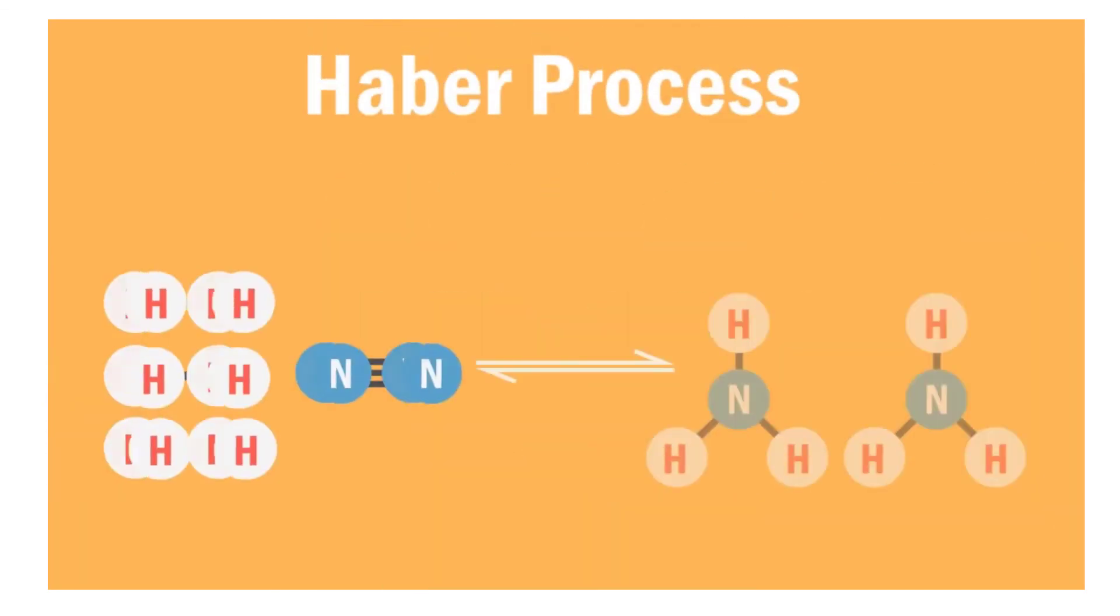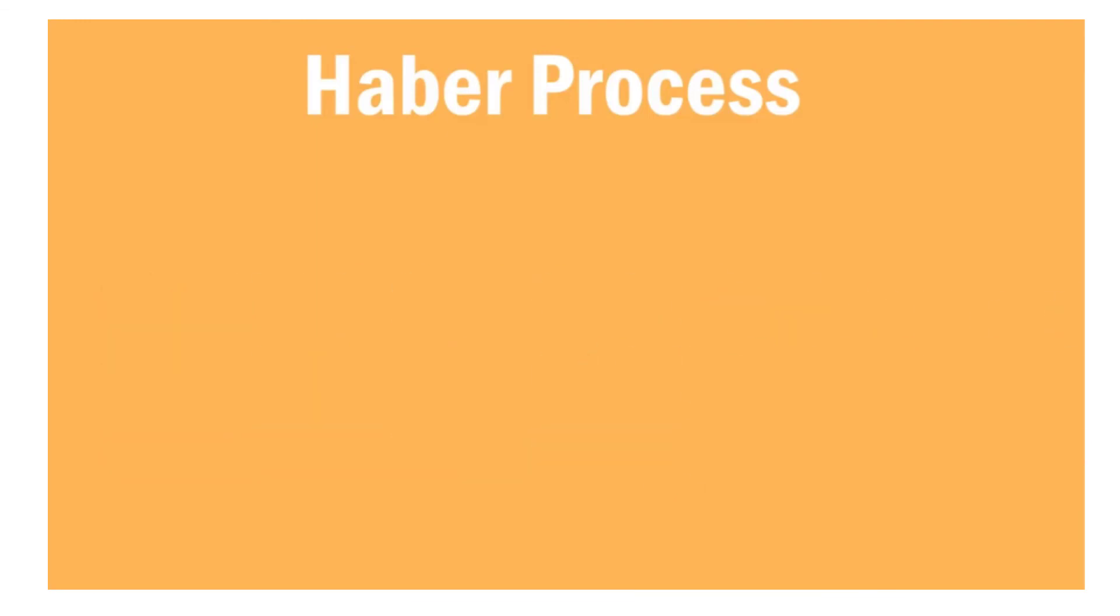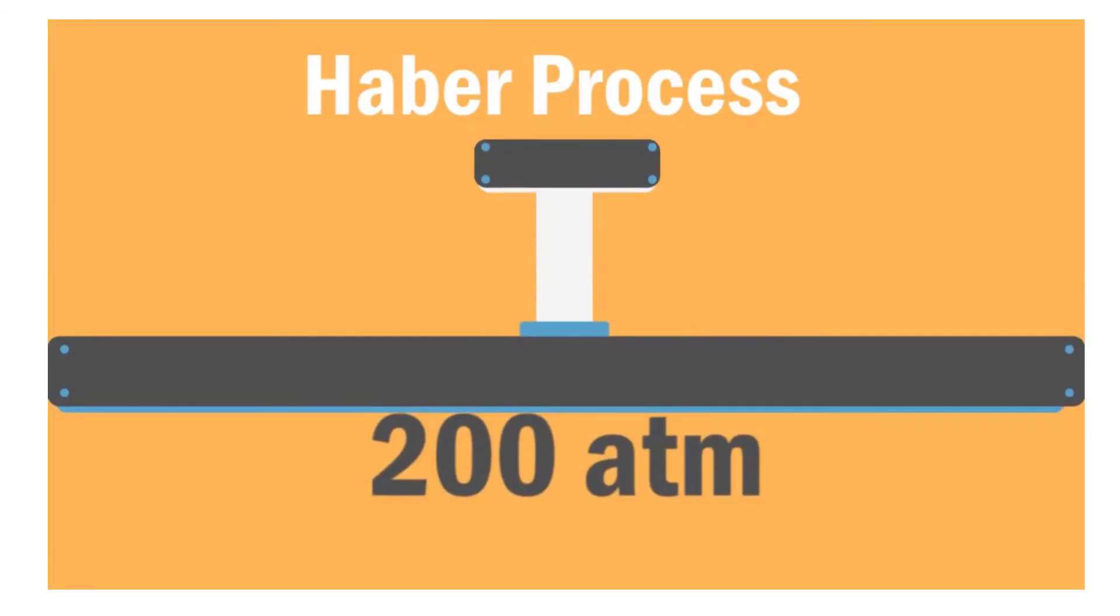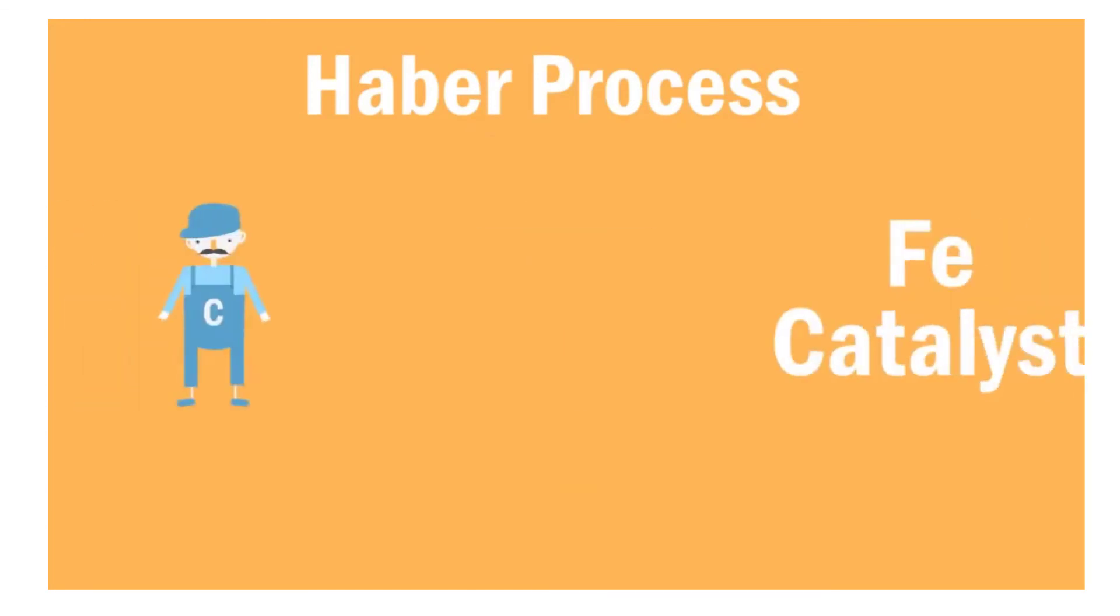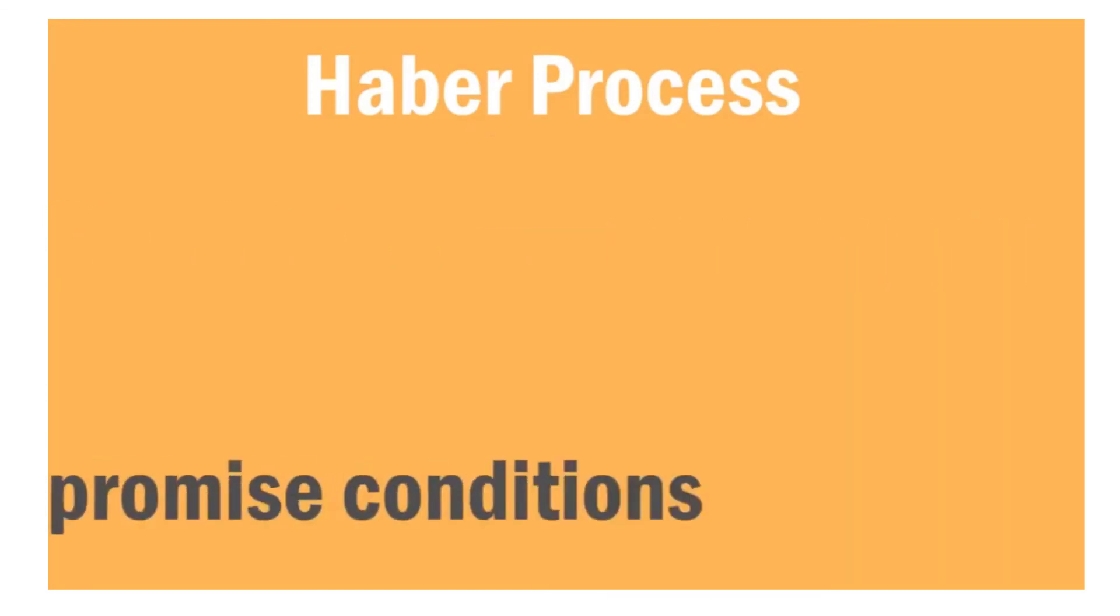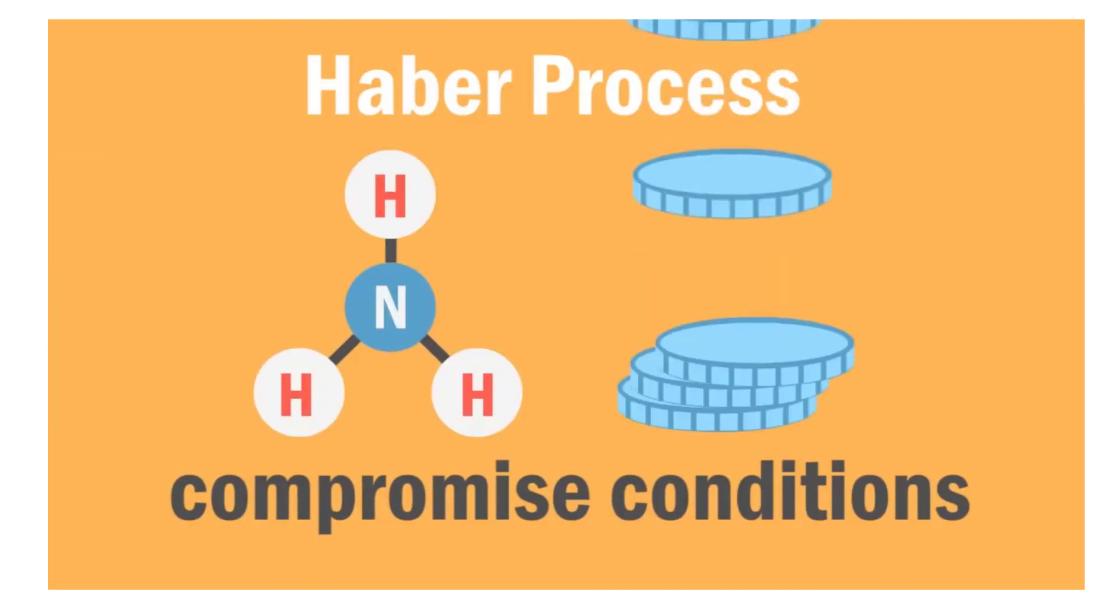In conclusion, the Haber process is the industrial process to produce ammonia from hydrogen and nitrogen. It is conducted at 400 to 450 degrees Celsius and at 200 atmospheres in the presence of an iron catalyst. These are compromised conditions in order to maximize ammonia production and economic profit.